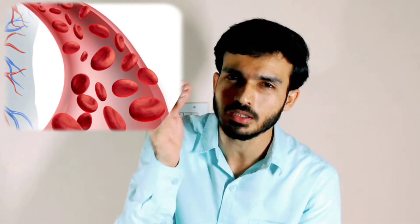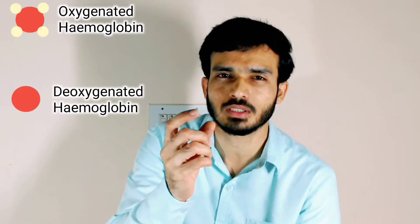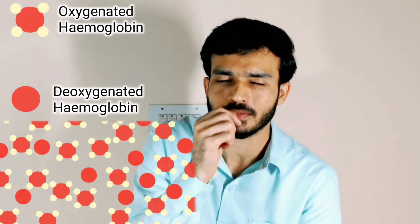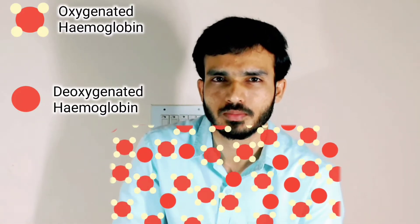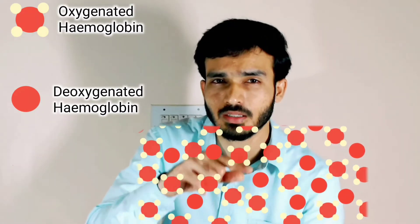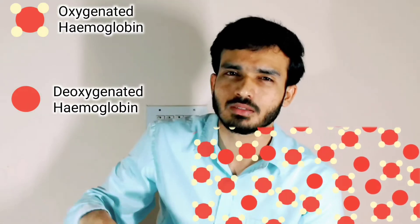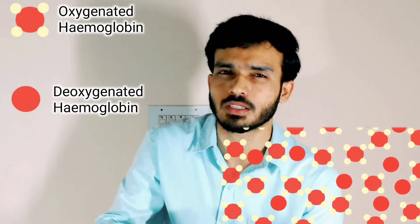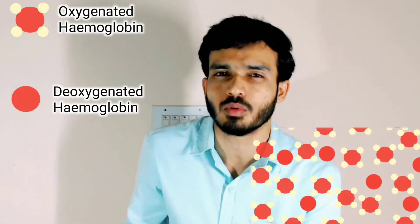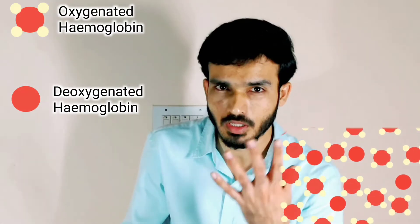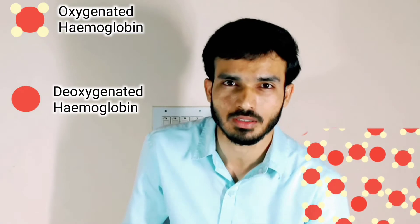Then it passes into the red blood cells. In the red blood cells, the oxygen binds with hemoglobin molecules. Then those red blood cells get circulated all over the body, including your fingers.